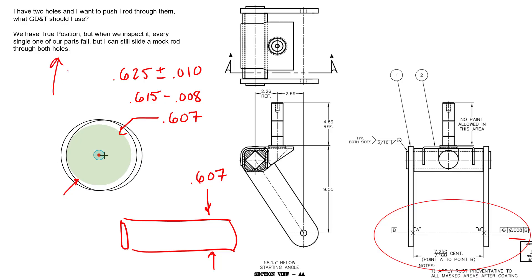So, as far as the question goes, why might you be able to inspect it every time and fail position, but still get the mock rod through? Well, what might be happening is you might be measuring at a 10,000th diameter deviation. In other words, the axis of the hole that you measured was outside the 8,000th diameter tolerance. So, you'd fail the position.